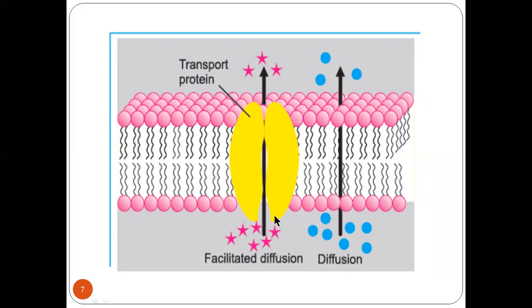So they need transport proteins. And the other reason is that they can be charged, positive or negative. So the charged molecules can't cross the lipid membrane. They also need a protein for the diffusion. And the charged molecules and very large molecules will be diffused through facilitated diffusion.